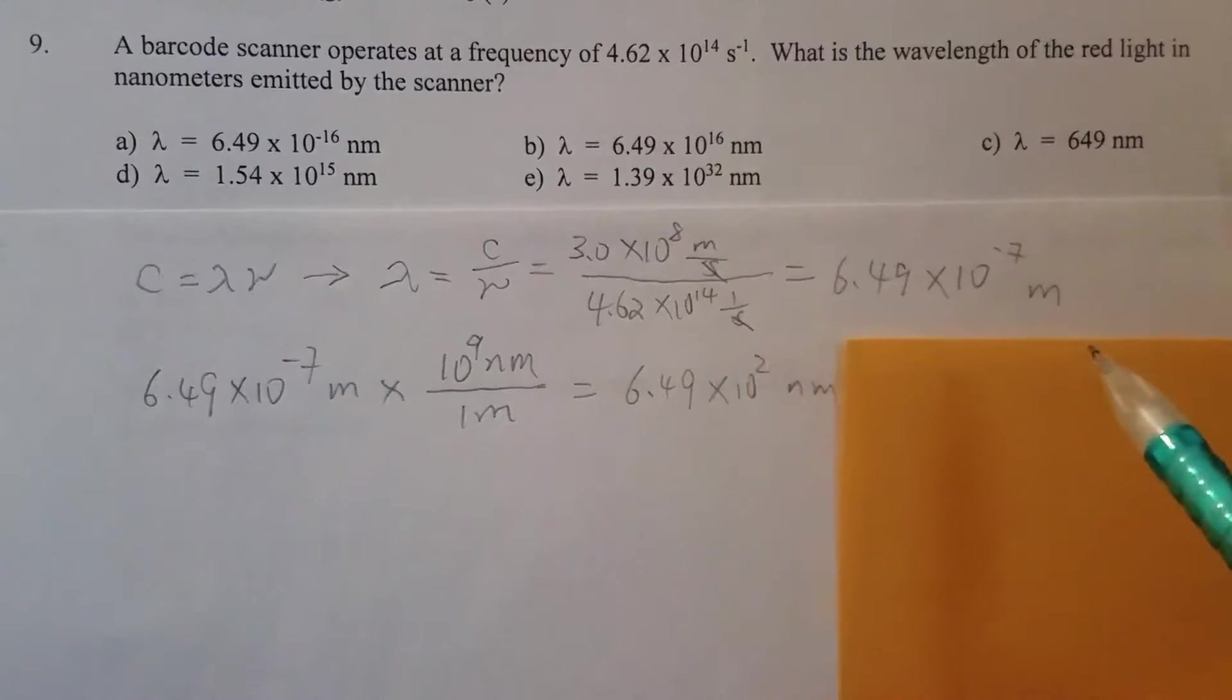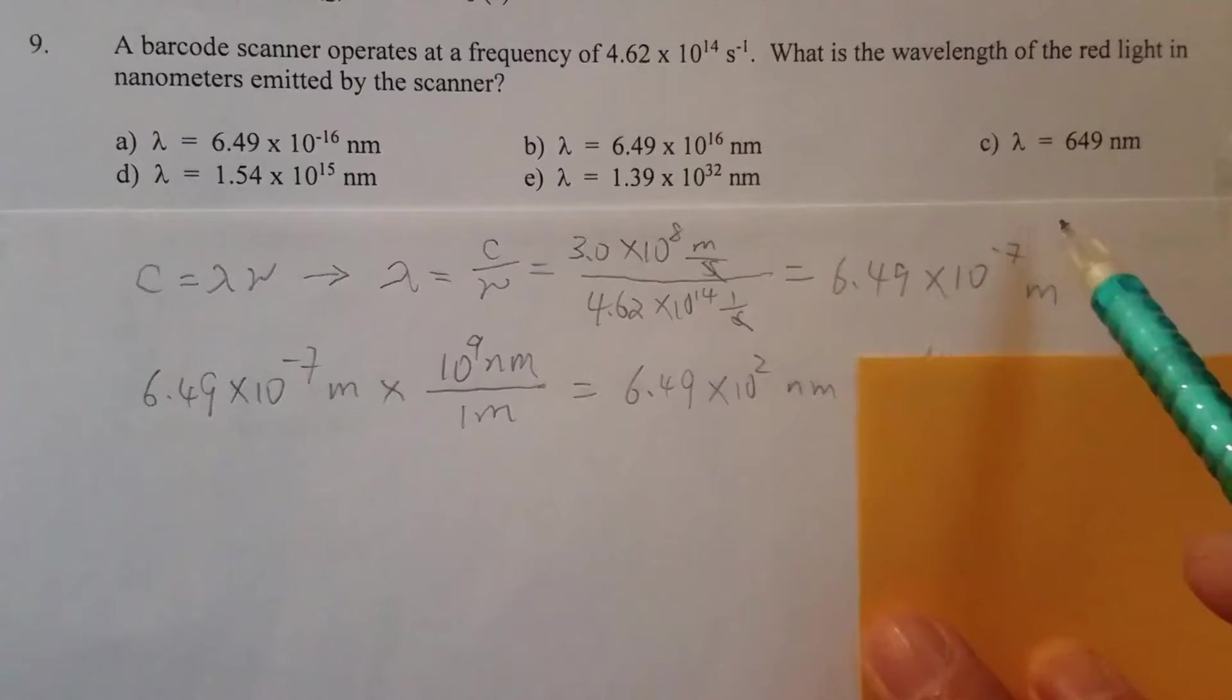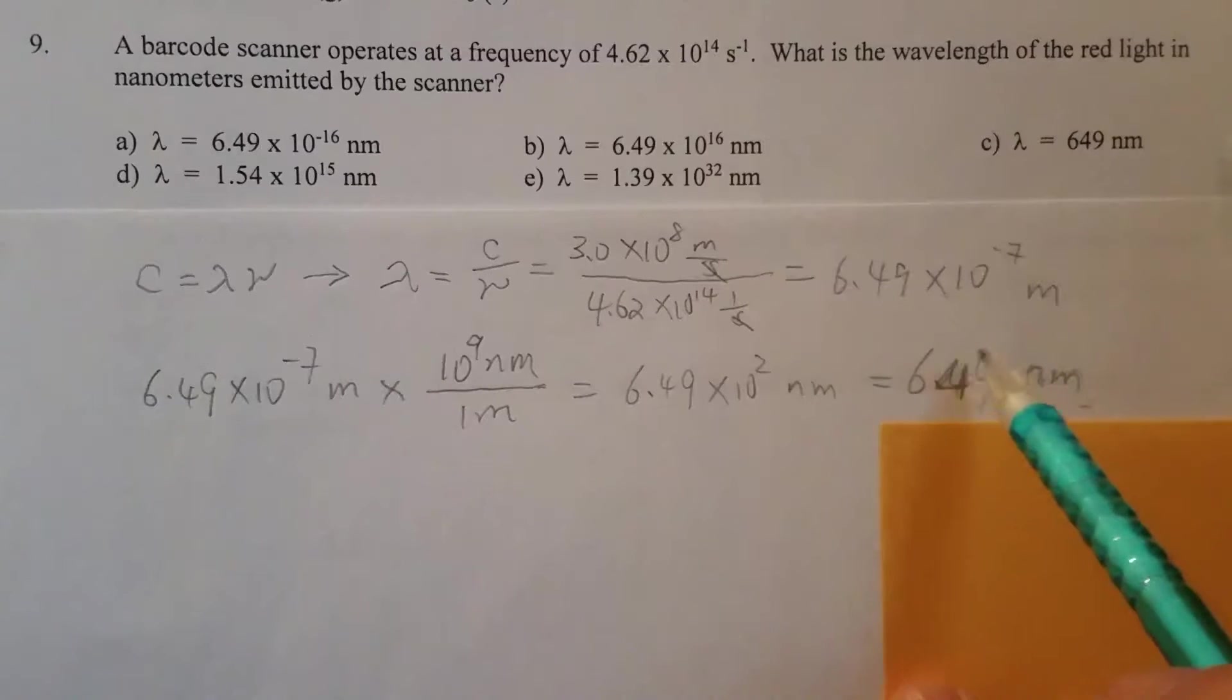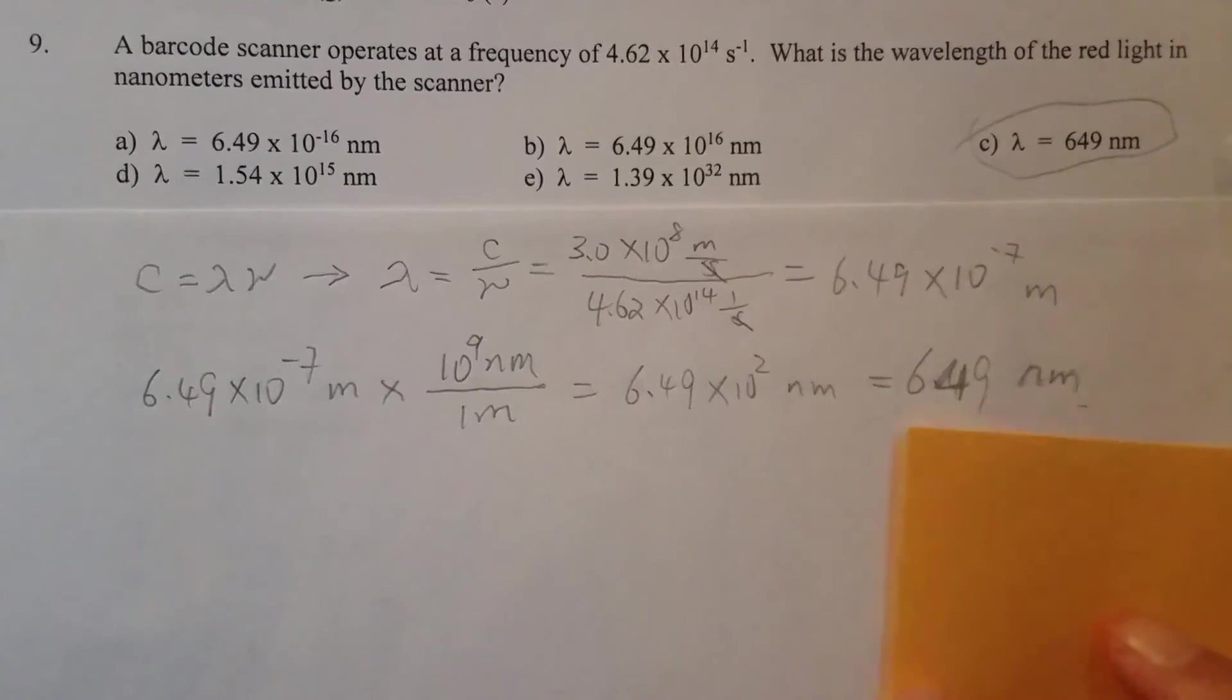And then the answer will be 6.49 times 10 to the second nanometers, so at this moment you already know C should be the answer. But if you're not certain, you can convert that scientific notation to 649 nanometers, and that matches this choice. So that's question number nine.